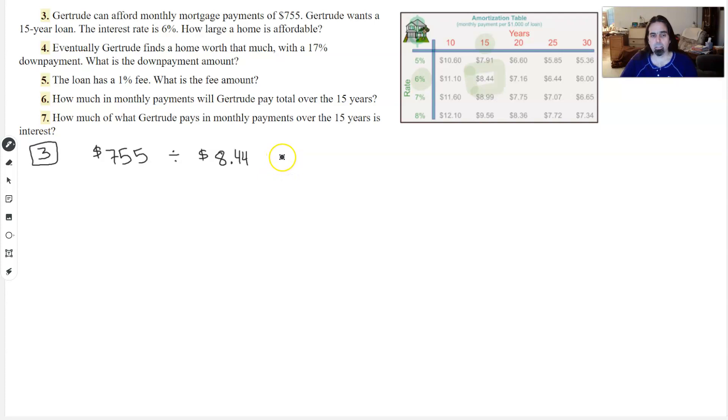$755 divided by $8.44 gives me about 89, and I'm going to round. I'll round down so she doesn't over budget. So about 89. That's how many thousands of home size she gets.